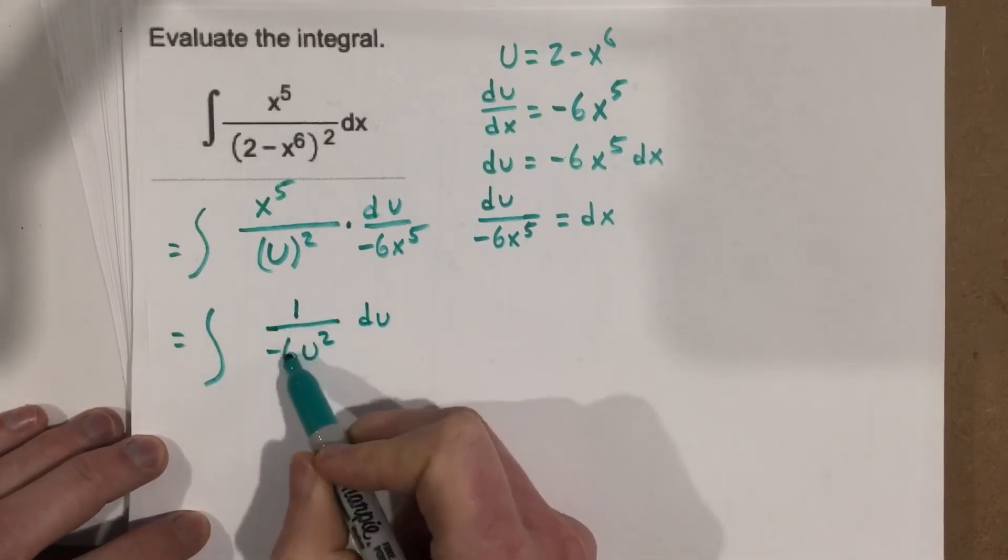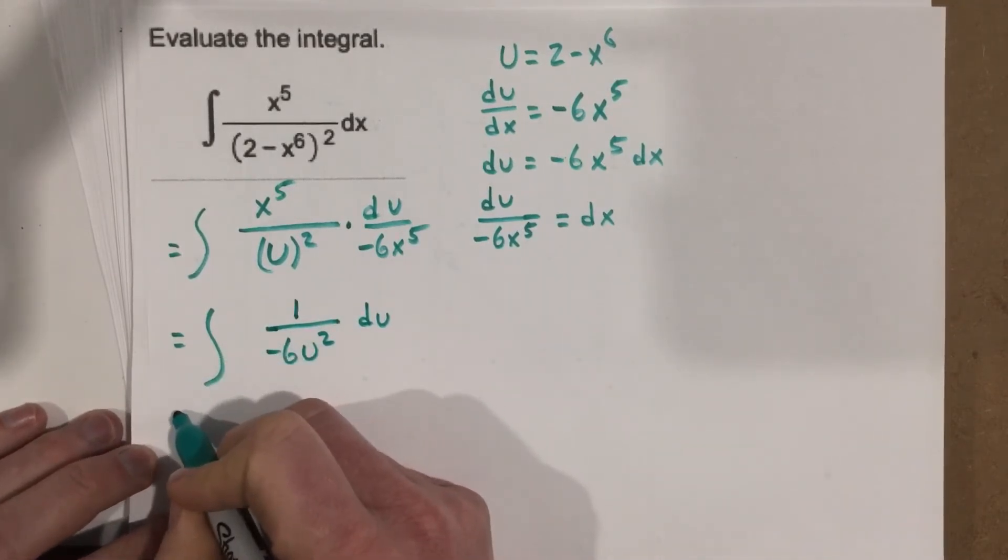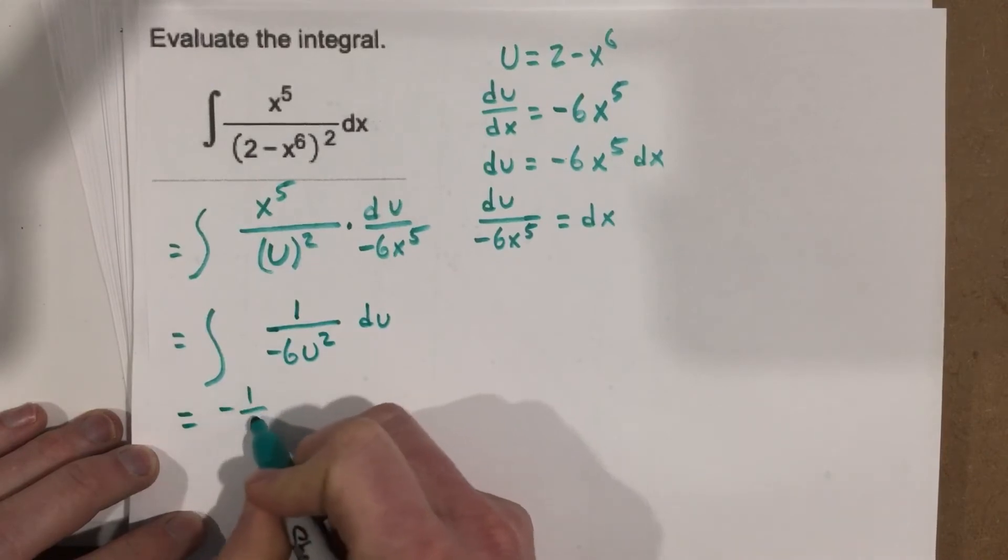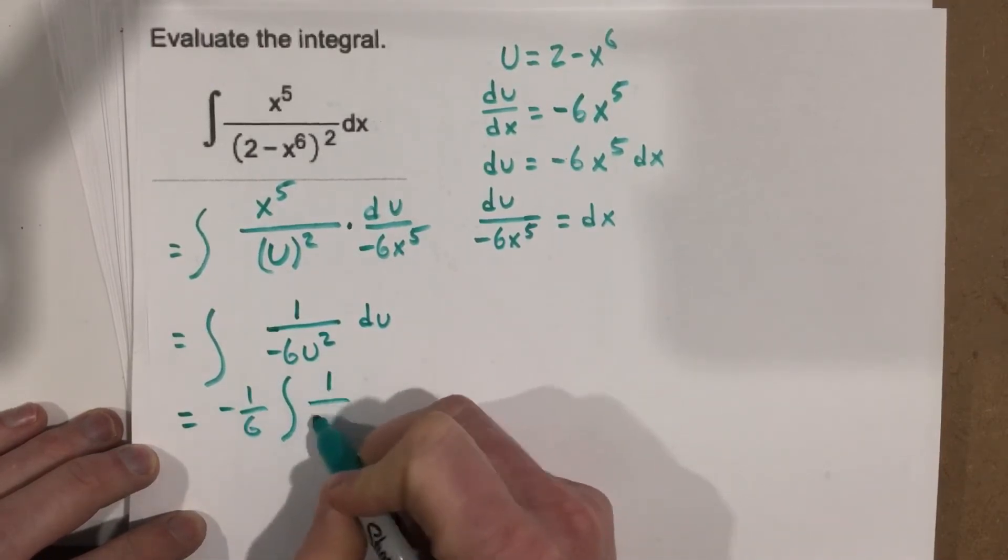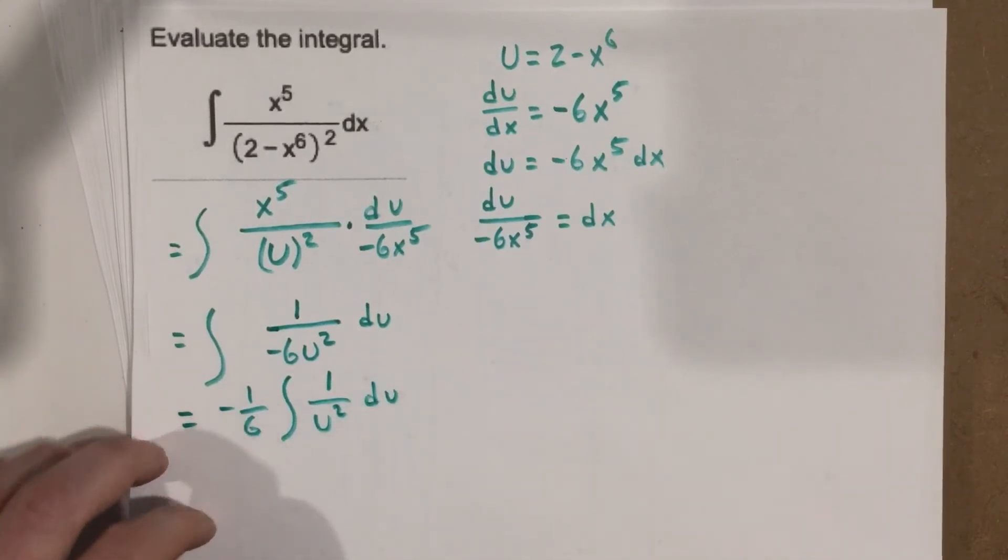But then we can take the negative one-sixth out front, I think that's best practice. And we have 1 over u squared du, now we can do the derivative there.